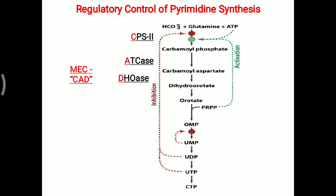Apart from that, UDP and UTP are directly inhibiting CPS2 in our body. So UDP and UTP are the end product regulation mechanism for pyrimidine synthesis. Apart from that, PRPP — that is phosphoribosyl pyrophosphate — activates pyrimidine synthesis. So you have to remember: PRPP is the activator, while UTP and UDP are the inhibitors of CPS2.